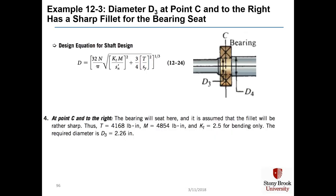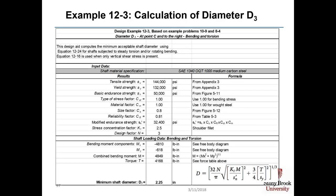Diameter D3 at point C and to the right has a sharp fillet for the bearing seat, giving KT equal to 2.5. It has the largest torques and moments, so it gets a diameter D3 of 2.26 inches.